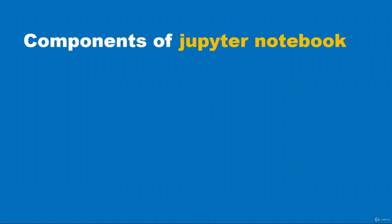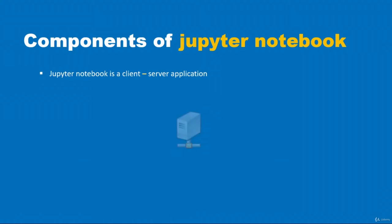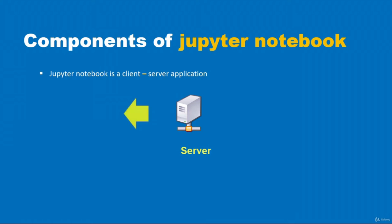In this video, we will take a look at the components of the Jupyter Notebook. The Jupyter Notebook application is a client-server application — a distributed application structure that partitions tasks or workloads between the providers of a resource or service, which are usually called servers, and the service requesters, which are usually called clients. The server is the resource provider.